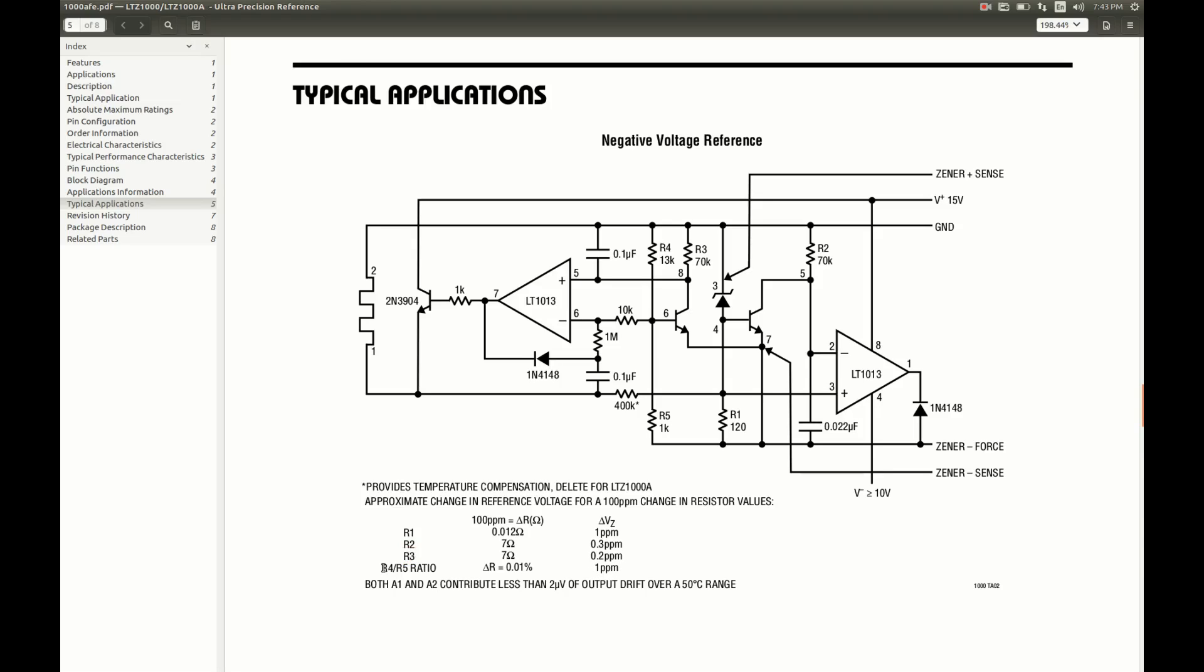This is a voltage divider, R4 and R5. The critical parameter is the change in the ratio. Each 100 ppm of the change contributes 1 ppm change to the output voltage, so it is attenuated about 100 times.